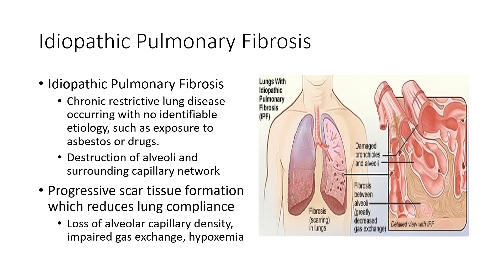Idiopathic pulmonary fibrosis, or IPF, is a chronic restrictive lung disease with no identifiable etiology — not from asbestos, drugs, or any known exposure. It involves destruction of the alveolar and capillary network in the lower airways, damaged bronchioles, and fibrosis between the alveoli. Applying Fick's principle: if we put more space between membranes, it impairs diffusion — and normally the alveolar-capillary interface is only a cell thick, so even a little fibrosis seriously impairs gas exchange. This leads to hypoxemia in these patients.